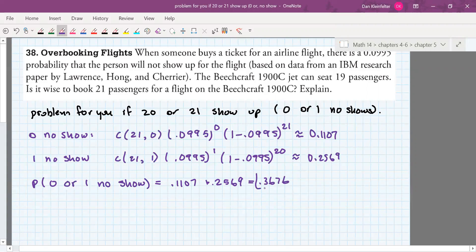So to answer the question, is that a good idea or not to book 21 passengers, I would say no, it's not a good idea. I guess it depends on how non-confrontational you are. What makes it not a good idea is that about 36% of the time, a little over a third of the flights that you do this with, you're going to have somebody who is irritated with you because you overbooked the flight. So overall, not a good idea.